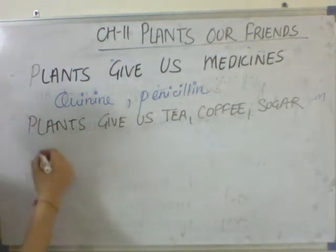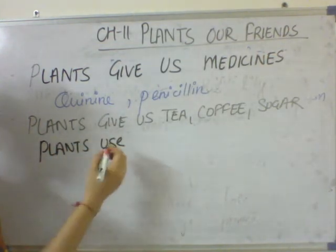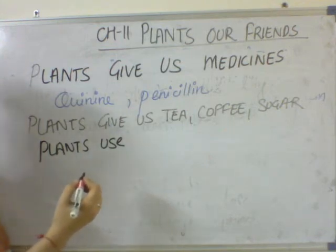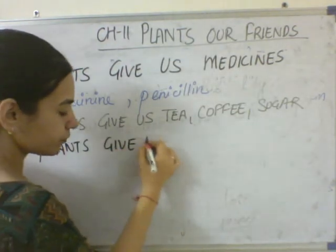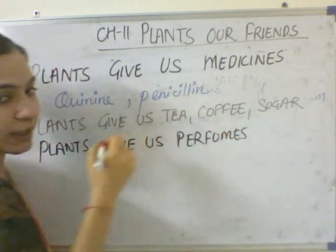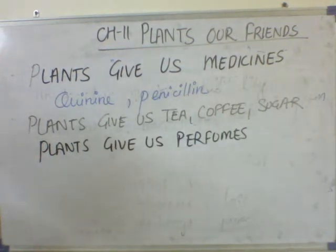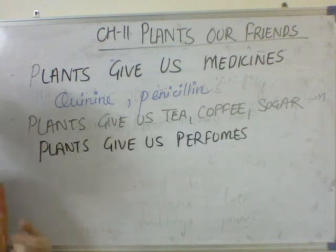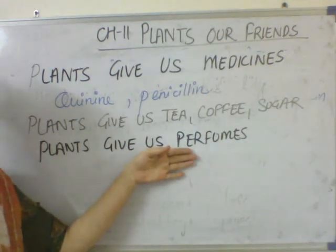Plants also give us perfume. Jab aap parties mein jaate hai, to aap perfume lagate hai na. Woh perfume aapko kahan se milta hai? Plants se. The plants that give us perfume are the ones having flowers, and some of those flowers have a very sweet smell. Khushbu aati hai un flowers mein se. Like rose, lily, jasmine — these flowers have a sweet smell. In mein se bohot achi khushbu aati hai. Aur in se hum kya banate hai? Perfumes.